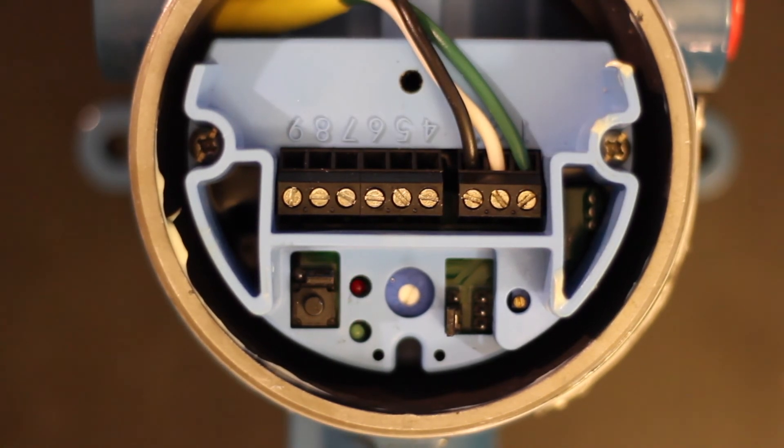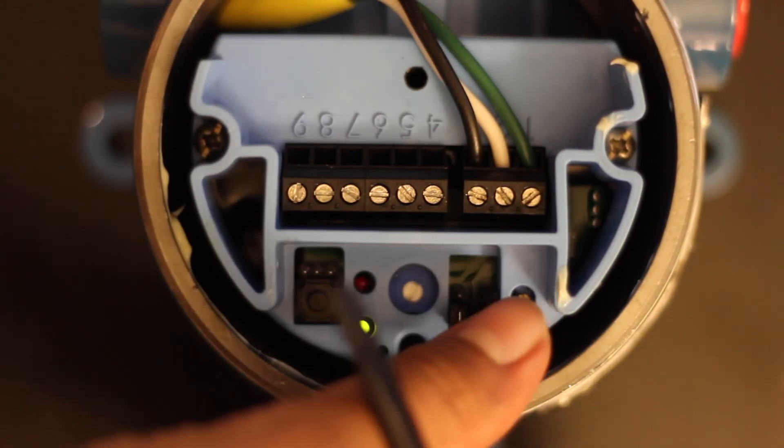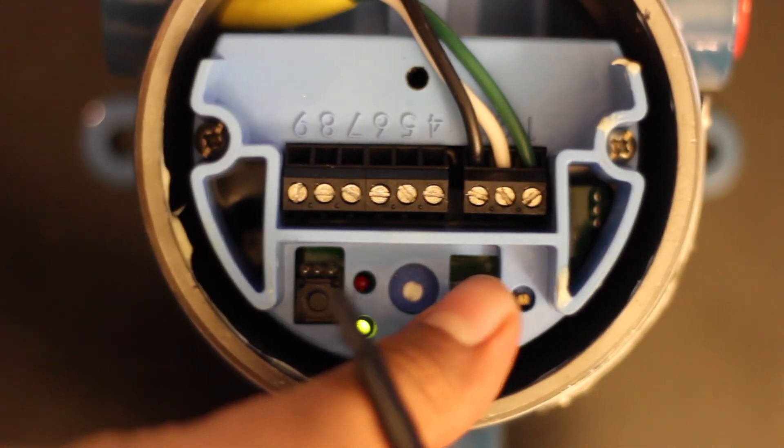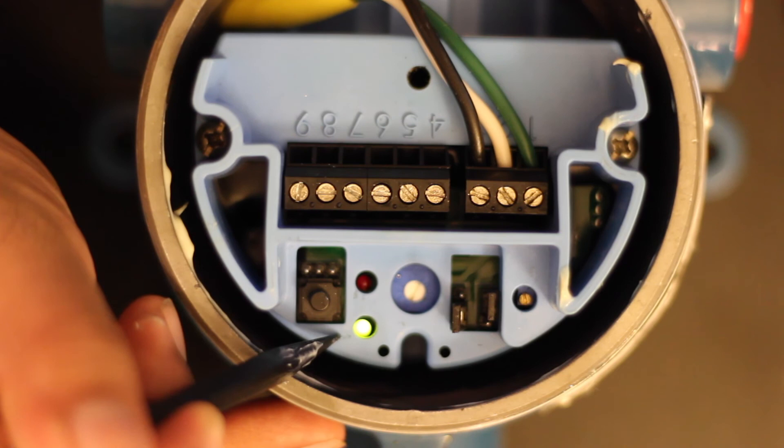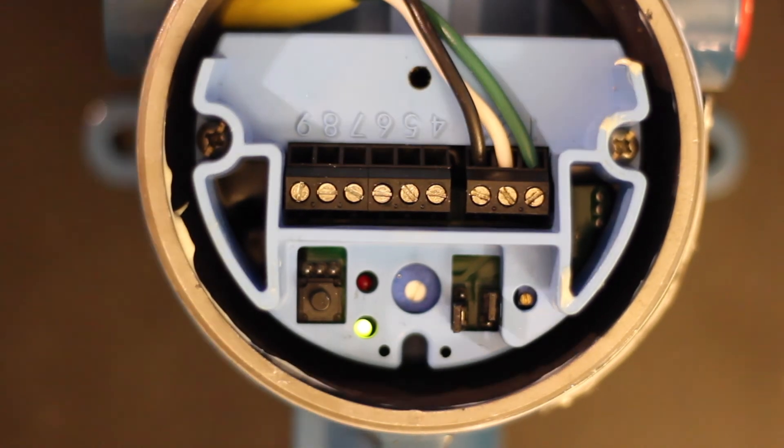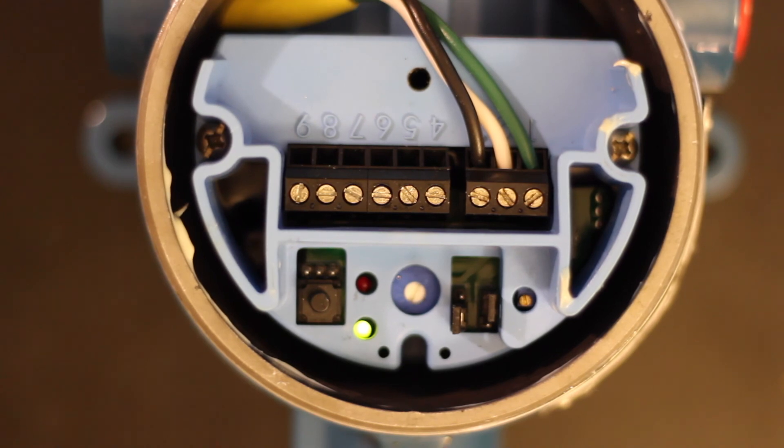Once you've decided what mode you're in, you can remove the time delay jumper from pins 1 and 2, and place it back on your time delay pins. Once that's done, the red LED will stop flashing, the green LED will turn back on to indicate your power, and the mode is properly selected. And you're done. Thanks for watching.